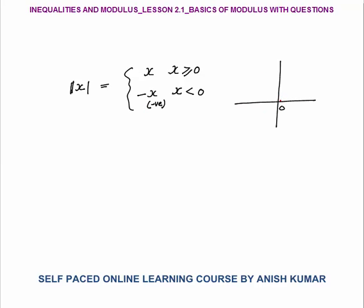The graph of mod x will be like this. If you put x = 1, y will be 1, making the graph of y = |x|. If you put x = 2, you will get y = 2 as well. Same way on the other side: if you put x = -1, still the value of y will be 1; if you put x = -2, still the value of y will be 2. That's how the graph of |x| looks.